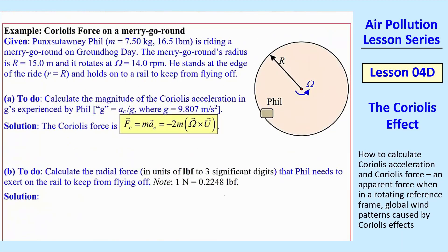Let's do a simple example with a merry-go-round or a roundabout. When I teach this in the spring, it's always right around Groundhog Day when we have this class. So Punxsutawney Phil, and there's his mass, 7.5 kilograms, is riding on a merry-go-round on Groundhog Day. Merry-go-round's radius is given. It rotates at 14.0 RPM. Again, he's standing at the edge, as shown here. Here's Phil, and he's at R equal capital R.